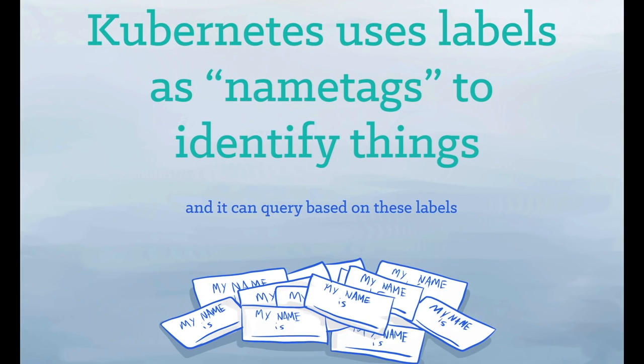Kubernetes uses labels as name tags to identify things, and it can query based on these labels. Labels are open-ended. You can use them to indicate roles, stability, or other important attributes.